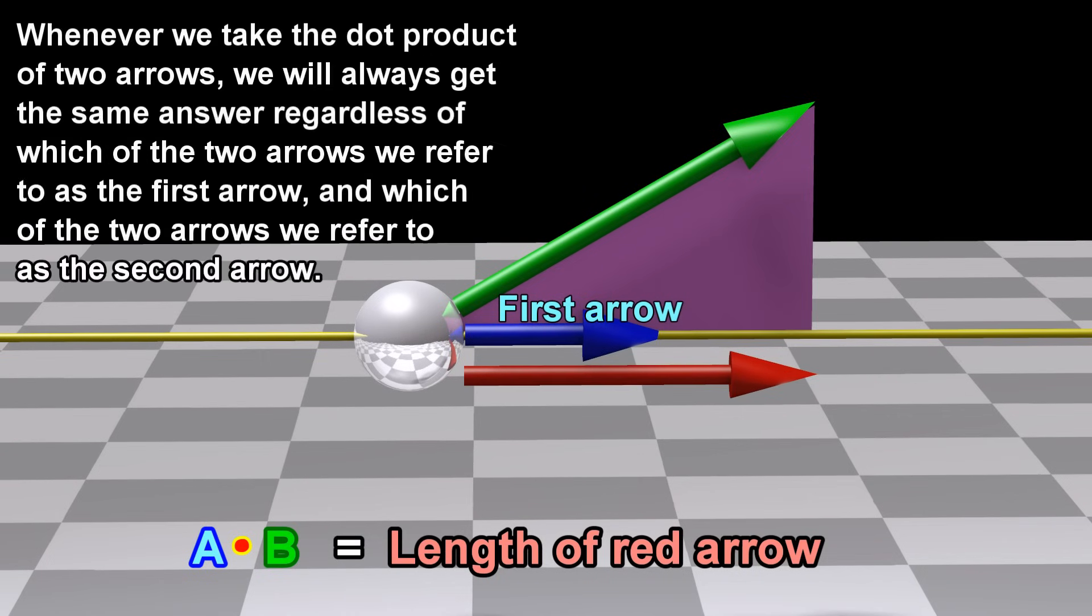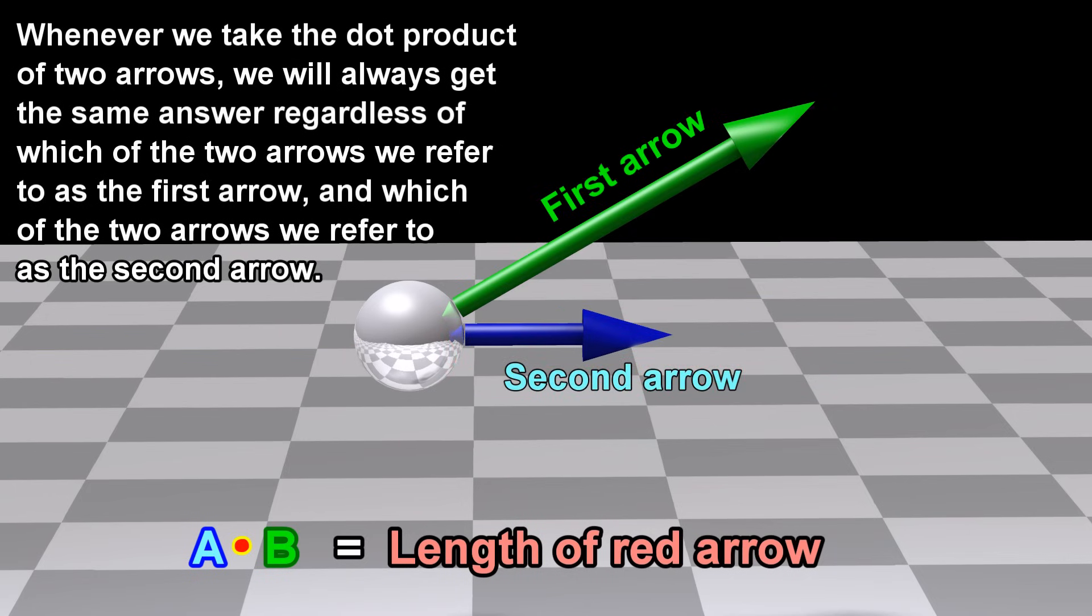Whenever we take the dot product of two arrows, we will always get the same answer, regardless of which of the two arrows we refer to as the first arrow and which of the two arrows we refer to as the second arrow.